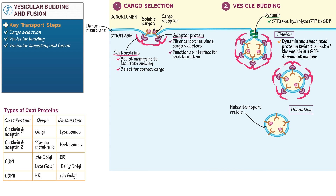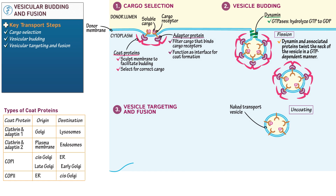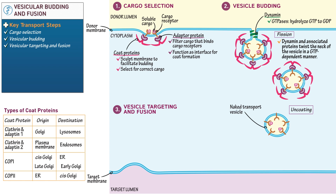This brings us to our final phase, vesicular targeting and fusion, wherein the vesicle targets a membrane and fuses with it. First, our vesicle must recognize its target. Draw a target membrane bending outward and label the target lumen. Now in the cytoplasm, draw a simplified naked vesicle with cargo. This time include the following proteins in the vesicular membrane: Rab GTPase, which also hydrolyzes GTP like the dynamin family, and V-snare protein — the V stands for vesicle — and will bind a complementary T-snare on the target membrane.